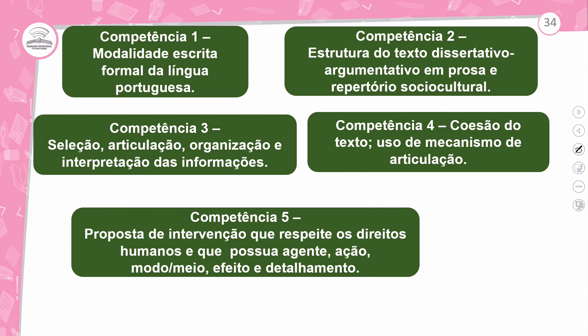A segunda competência é a estrutura do texto — ele tem que estar em prosa com repertório cultural. Competência três: seleção, articulação, organização e interpretação das informações. A quatro: a banca vai avaliar se o texto está coeso e se você usou os mecanismos de articulação corretamente, como os conectivos coordenados e subordinados. E a competência cinco: a banca verifica sua proposta de intervenção — se respeita os direitos humanos, se tem um agente, a ação, o modo e meio, e o efeito e detalhamento.